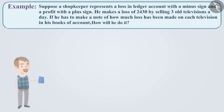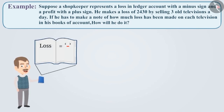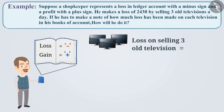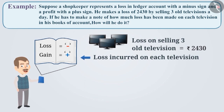Next example. Suppose a shopkeeper represents a loss in his ledger account with a minus sign and a profit with a plus sign. He makes a loss of 2430 by selling three televisions a day. If he has to make a note of how much loss has been made on each television in his books of accounts, how will he do it? The loss of Rs. 2430 can be represented by minus Rs. 2430. We have to find out how much loss the shopkeeper has incurred on each television. For that, we will divide minus 2430 by 3.